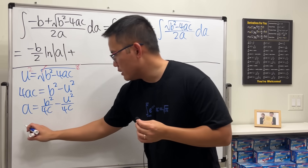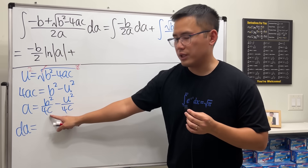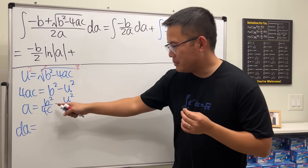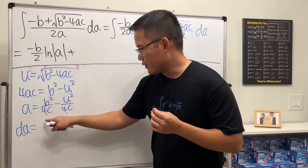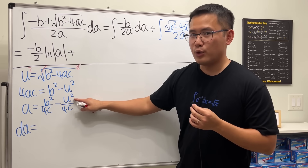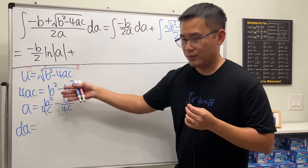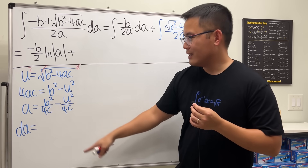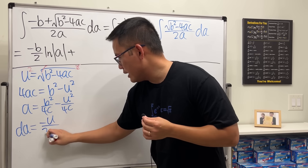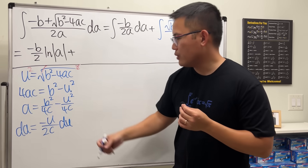Taking the derivative on the left gives da. On the right, b and c are constants, so the b² term differentiates to zero. Differentiating −u²/(4c) with respect to u: bring the 2 to the front, giving −2u/(4c) = −u/(2c). So da = −u/(2c) du.